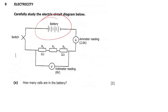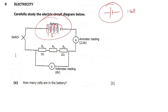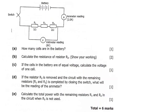First of all, you need to know the diagrammatic representation of a cell. A cell in a circuit is represented by a long bar and a short bar — that is just one cell. So when you check here, you have this which is one cell, this another cell, this another cell, this another cell. So you have one, two, three, four — in total, four cells.